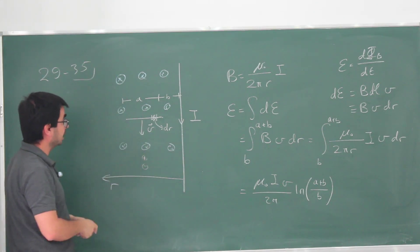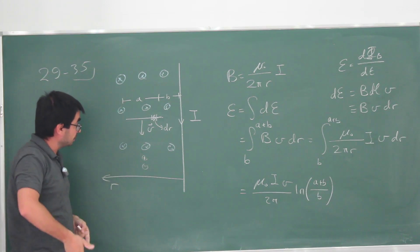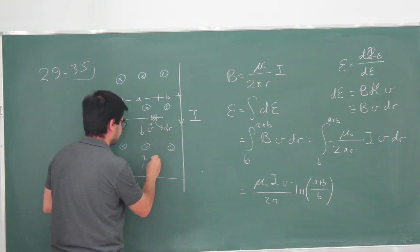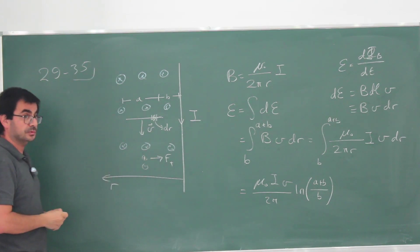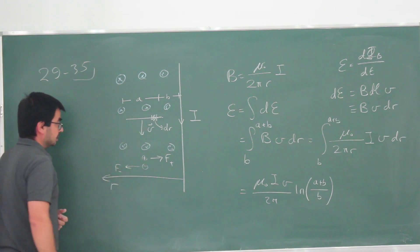As these are moving down, they're going to feel a force that is just given by the Lorentz force. This is their velocity and this is their magnetic field. Positive charges are going to feel a force towards the wire. Negative charges are also going to feel the Lorentz force, but their force is going to be switched.